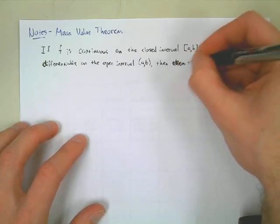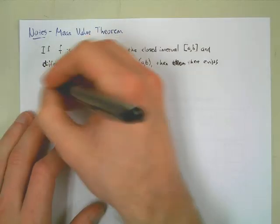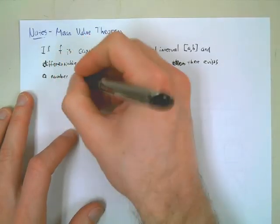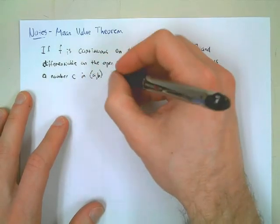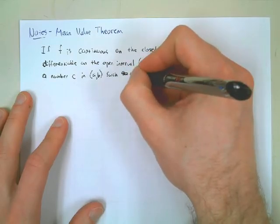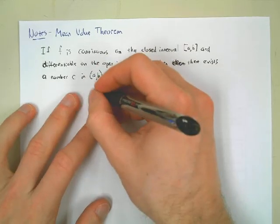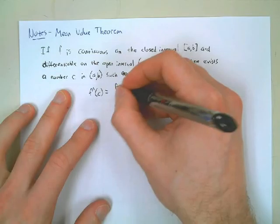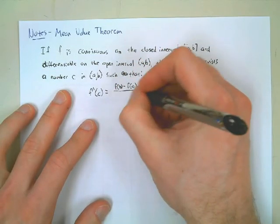Then there exists a number C in the open interval (A, B) such that F prime of C equals F(B) minus F(A) over B minus A.